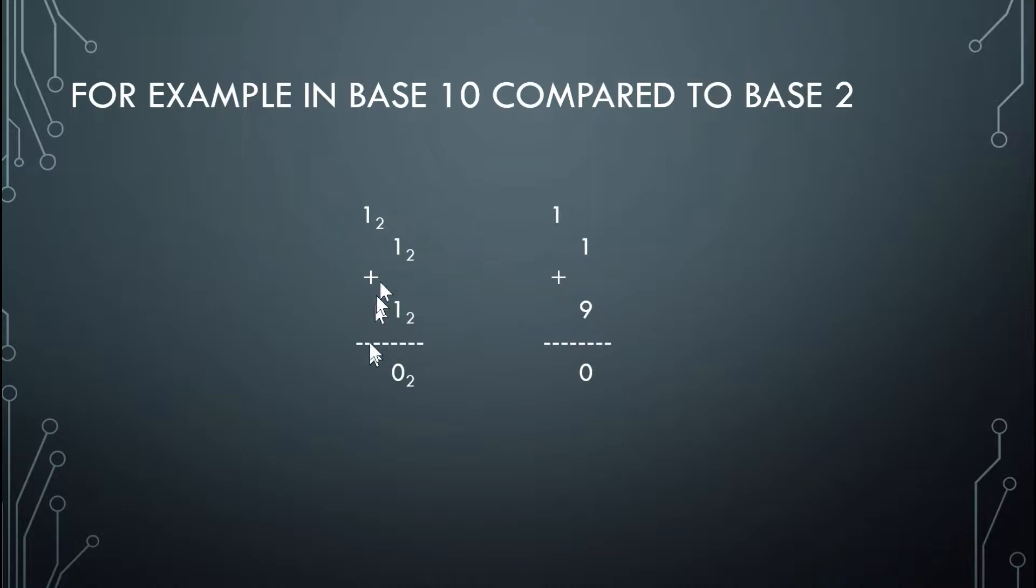And then from here, it's basic addition again. 1 plus nothing is 1, and 1 plus nothing is also 1. And these are not equal. This is equal to 2, and this is equal to 10.